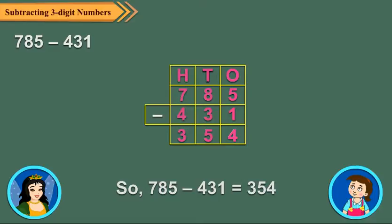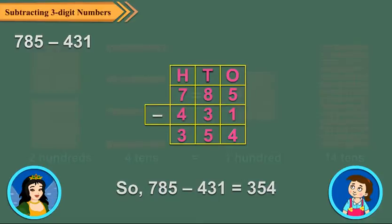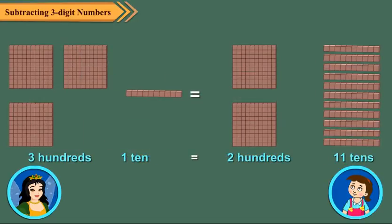Now let us see how to regroup hundreds to tens. Take a number 240. We can think of it in two ways. Similarly, think of the number 310 in two ways.